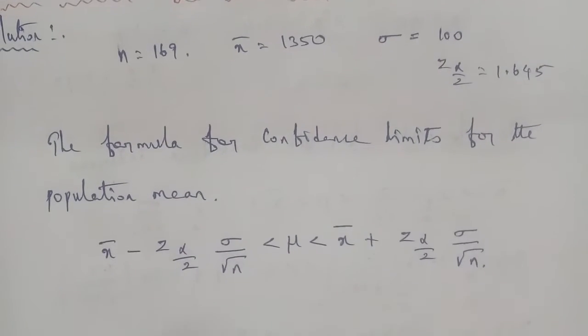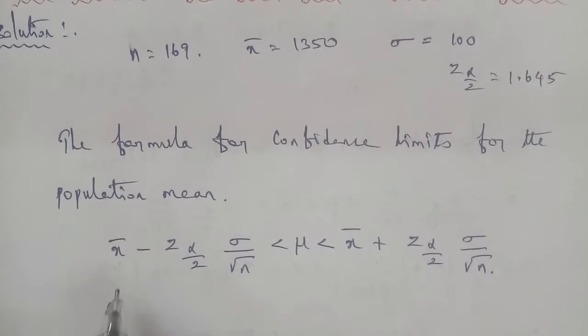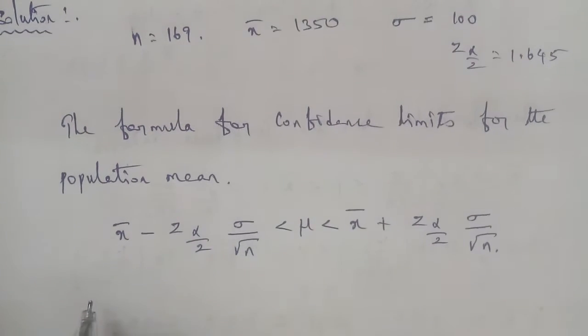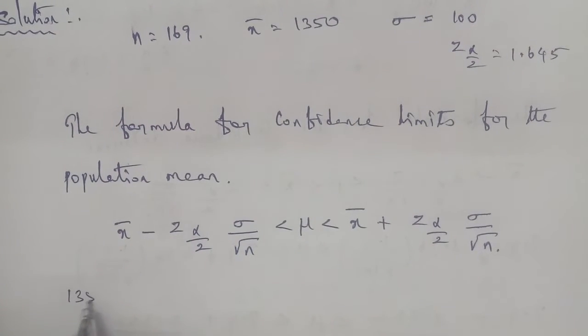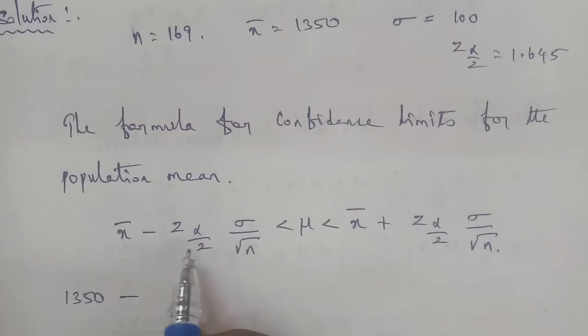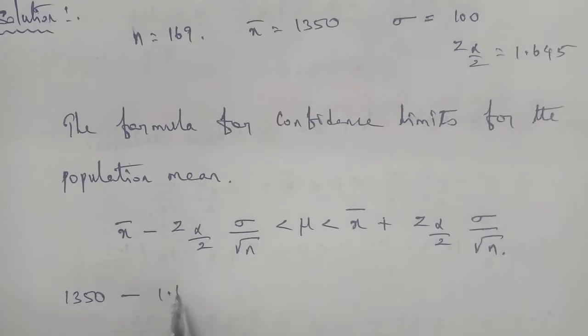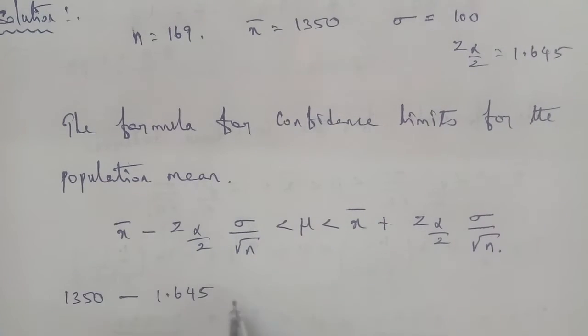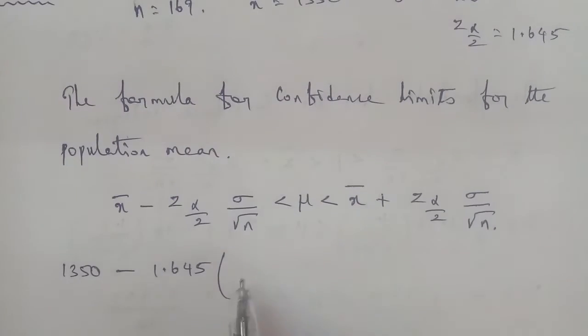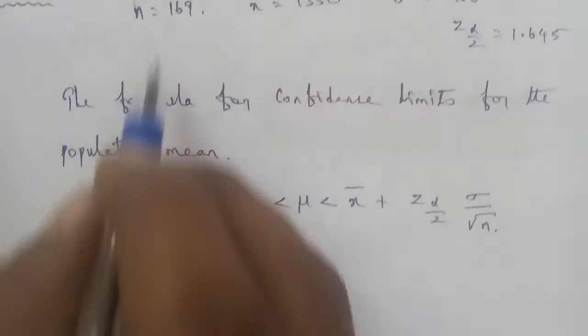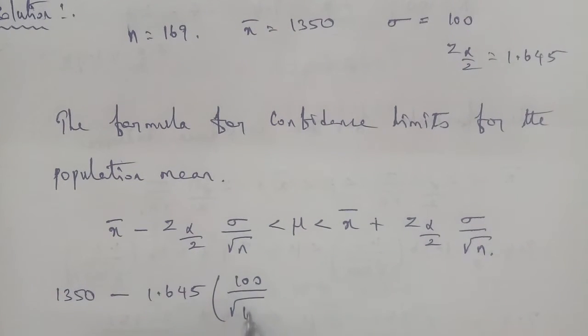Now substitute these values into the formula. x̄ value is 1350, so we get 1350 minus z(α/2), which is 1.645, times sigma, which is 100, divided by root n. n's value is 169, so that's 1350 - 1.645 × (100/√169) less than μ.